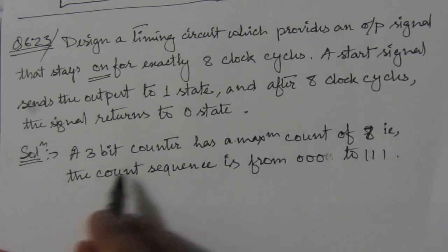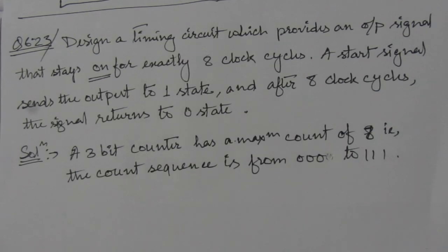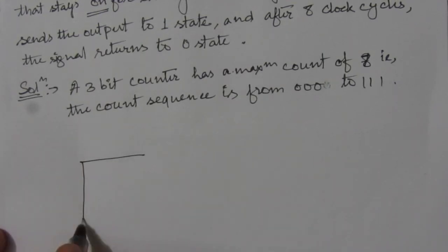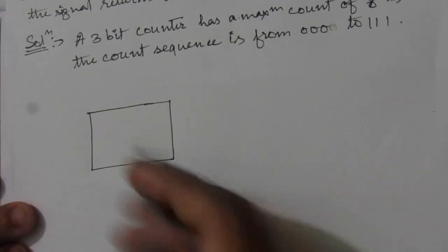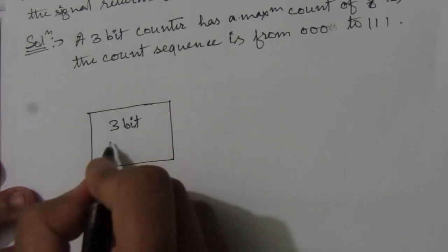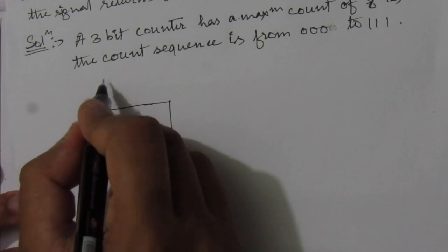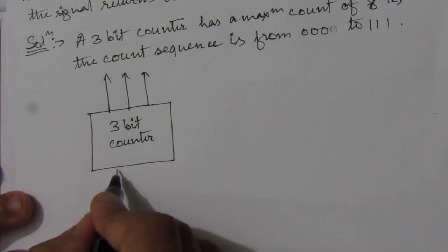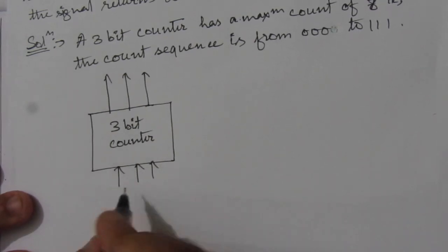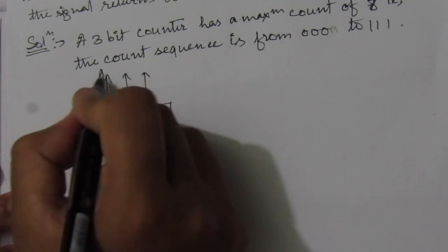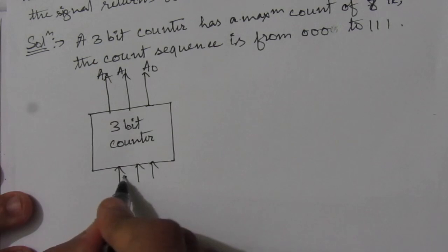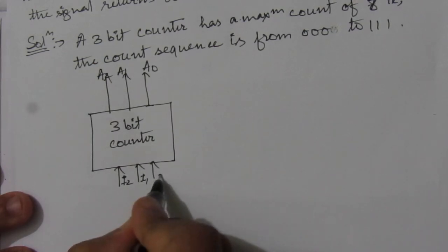We have to use this counter along with a flip-flop. I will use a T flip-flop here. Let us assume we have a 3-bit counter with 3 output ports — A2, A1, and A0 — and 3 input values — I2, I1, and I0.